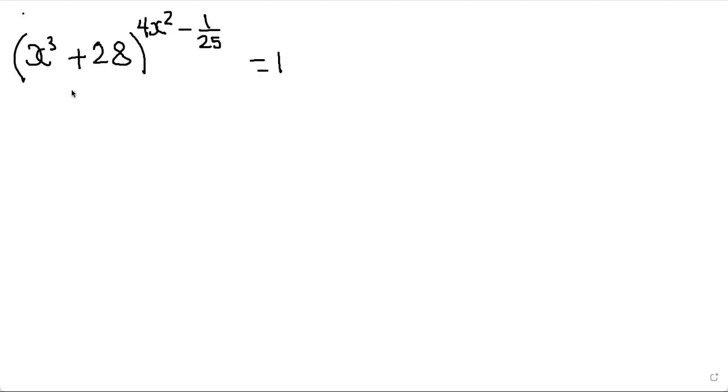Okay, so here, this looks very complicated, isn't it? Like, what's going on? It equals 1. How am I going to figure this out? This looks very complicated. Here we have x cubed plus 28, 4x squared, minus 1 over 25 fractions. So what's going on? Where should we go with this?